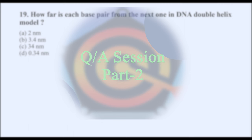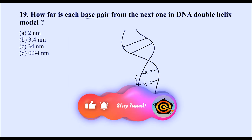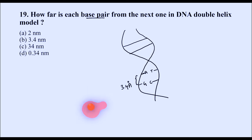The next question is about how far each base pair is from the next one in the DNA double helix model. We have already read about it — that is 3.4 Angstroms. The options are given in nanometers. Since 1 Angstrom equals 0.1 nanometer, 3.4 Angstroms equals 0.34 nm. So the correct option is D.